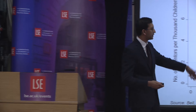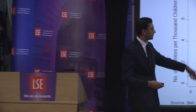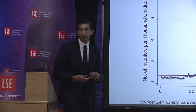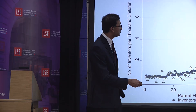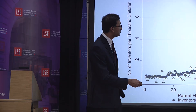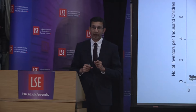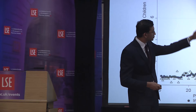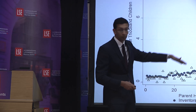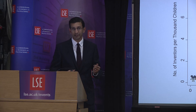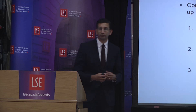This relationship is true not just for patents overall. If you look at the fraction of inventors in the top 5% of citations — a natural measure of patent impact — that relationship looks almost exactly the same as the raw relationship. Even among really impactful patents as measured by citations, kids from high-income families are much more likely to have those than kids from lower-income families.